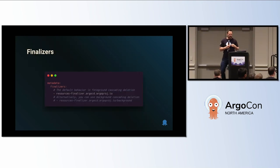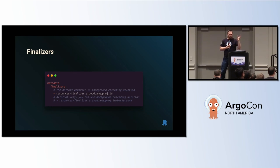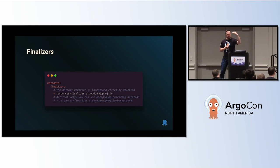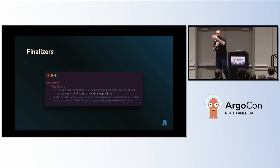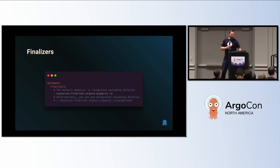Finalizers in Argo CD: when you create an application, you have the option to create finalizers on your resources. The default configuration does a foreground cascading deletion. So if you delete an application and finalizers are set on resources — which is one of your sync options — it will automatically mark all child resources for deletion, delete all of them, and then delete the application.